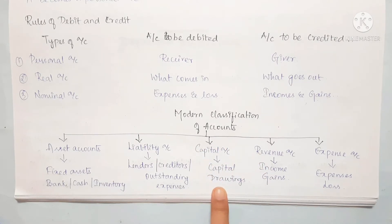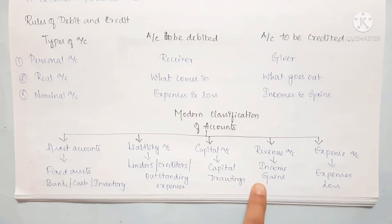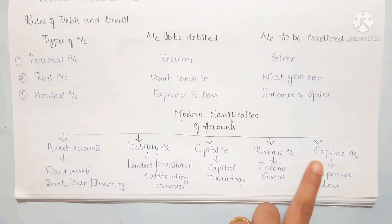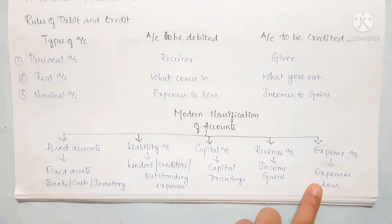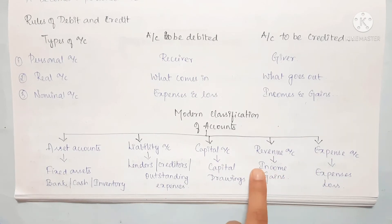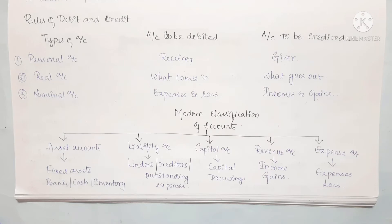Next, where do revenues and gains come in? Expenses and losses fall under the expenses account, while income and gains fall under the revenue account. This completes the modern classification of accounts into 5 categories.